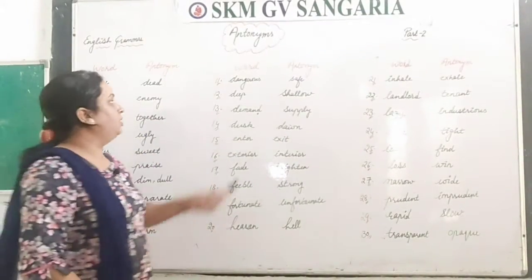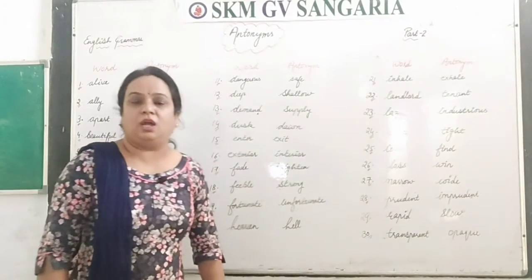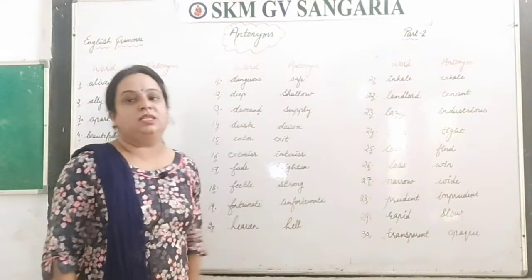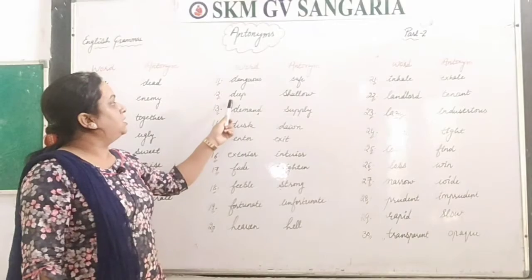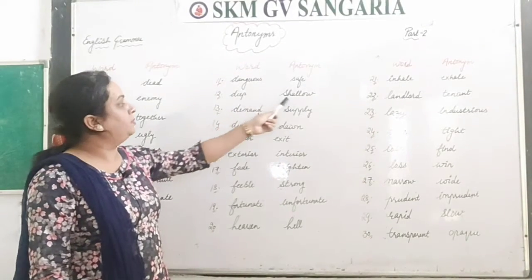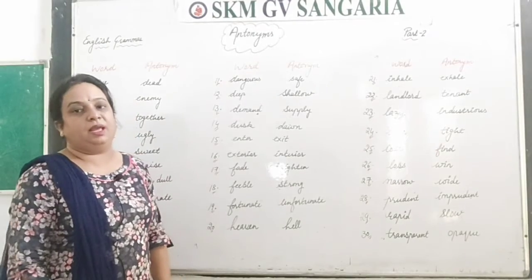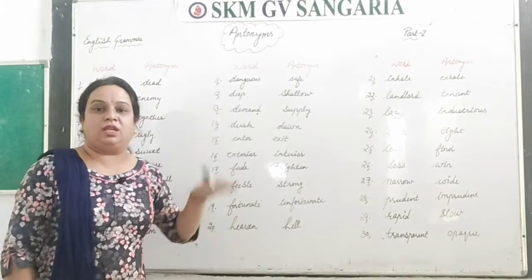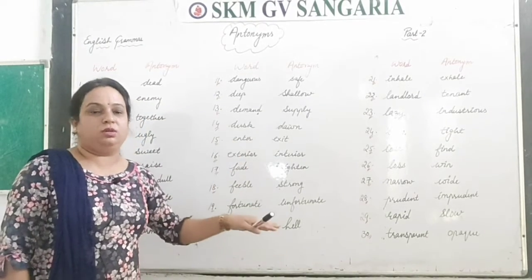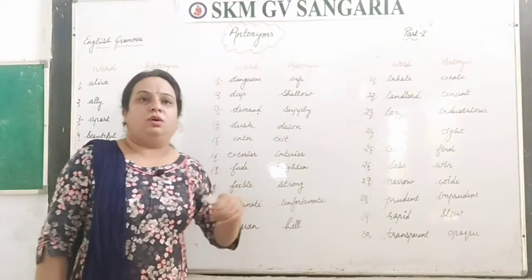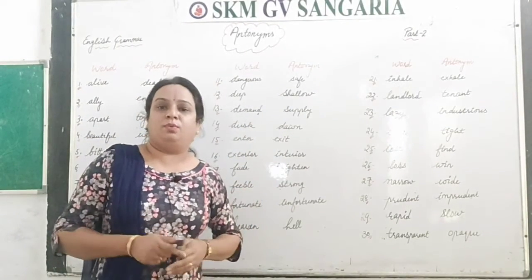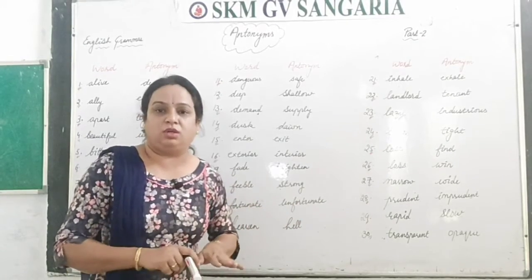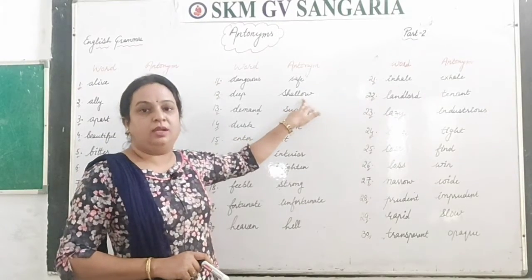Now word number 11 is 'dangerous,' D-A-N-G-E-R-O-U-S. You know what dangerous means, and the opposite word is 'safe.' Next is 'deep,' D-E-E-P. The opposite is 'shallow,' S-H-A-L-L-O-W. Deep means like when we go to a river, that river is deep — many fathoms of water. Shallow is like the entry area of a swimming pool where there is less water — that is called shallow.